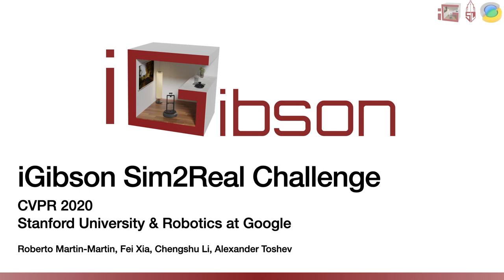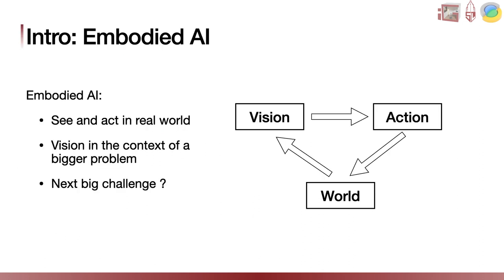Hello, my name is Alexander Toshev and in this session we're going to talk about the Gibson Simulation Trial Challenge. This challenge is a cooperation between Stanford University and Robotics at Google. The topic of this workshop is embodied AI, which is the study of computer vision in the context of a bigger task — a task where a system not only needs to perceive the world around it, but also act upon this perception and interact with this world.